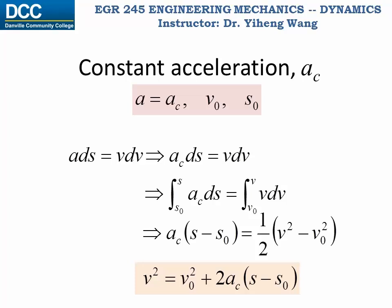As you can see, this equation provides a direct relation between the velocity of the object and its position at the same point. Only v and s are variables in this equation.